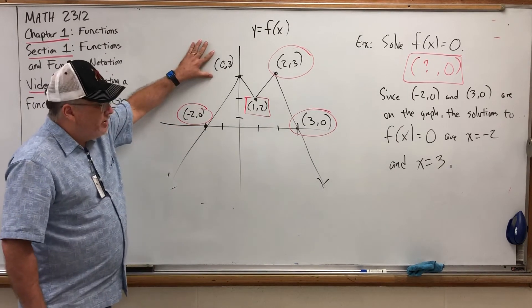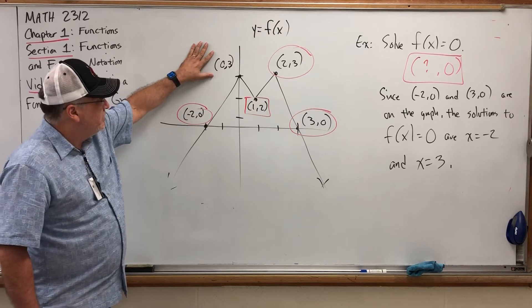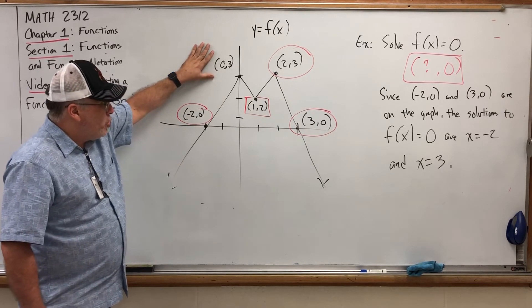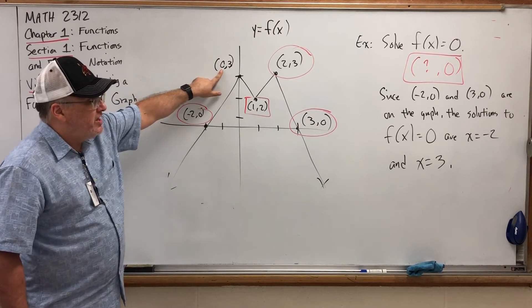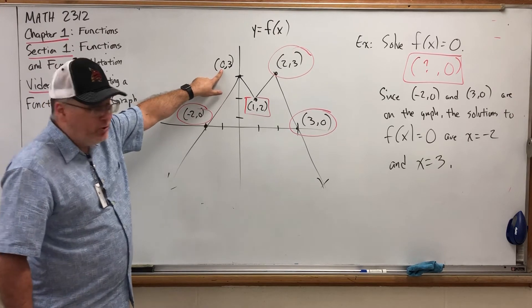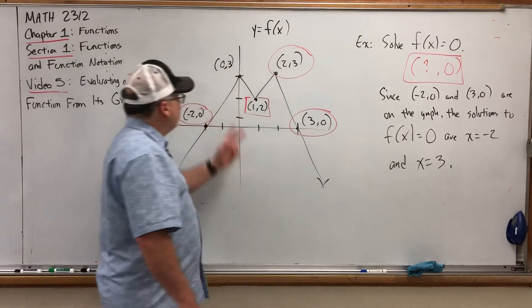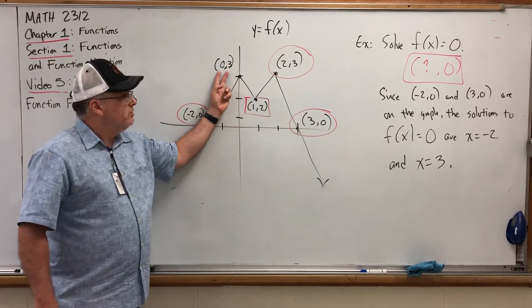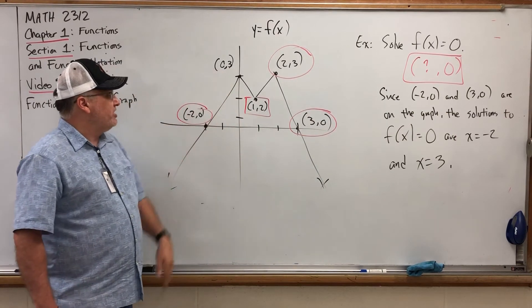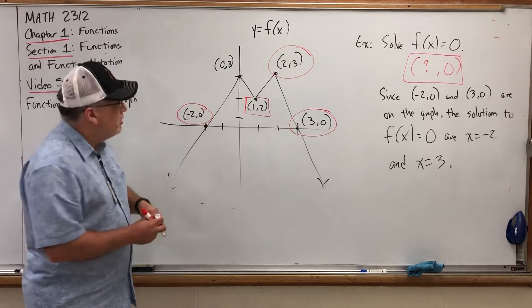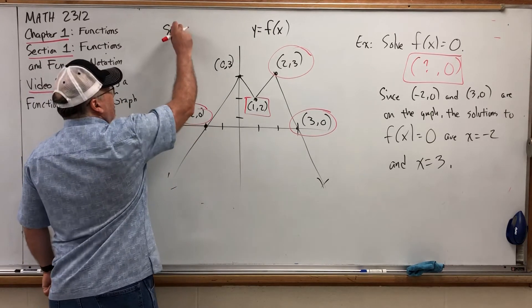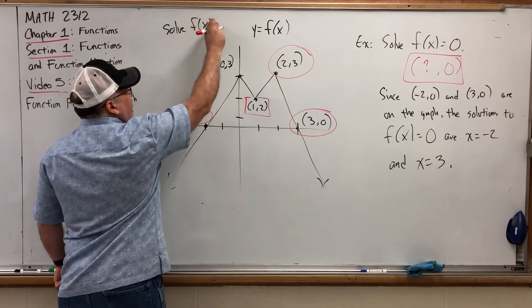Now, if you're looking at this point, here's where you have to be very careful. This point does have a 0, but it's the x. And in function notation, that's the input, but the 0 here is the output. What question could this answer? Well, it could answer, what is f of 0? Or it could answer, solve f of x equals 3.